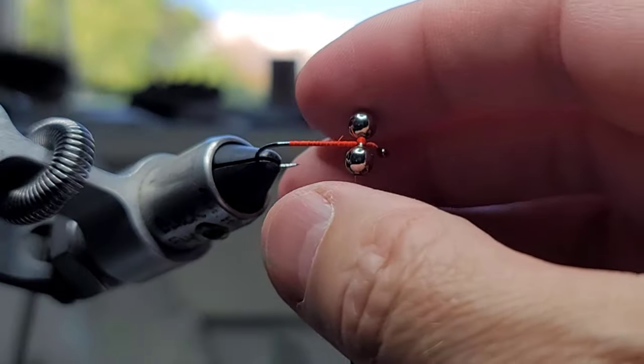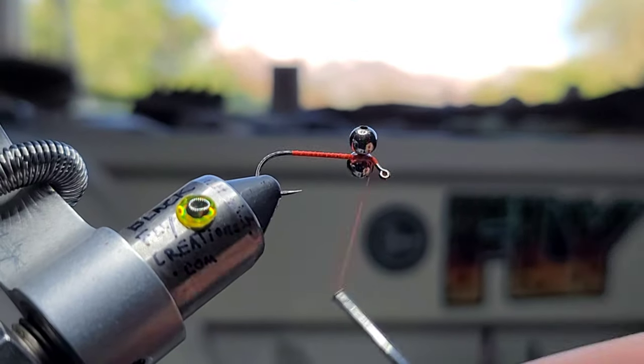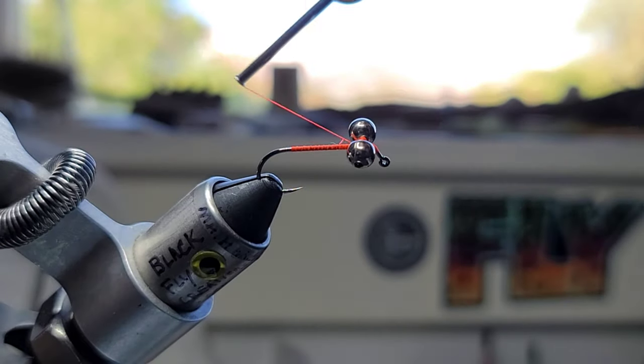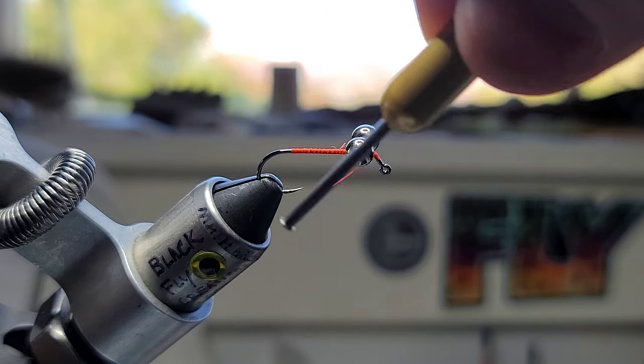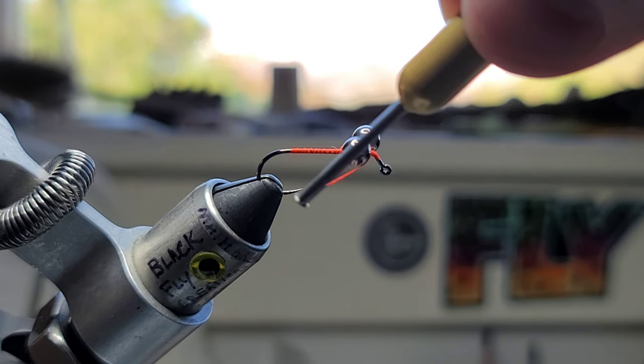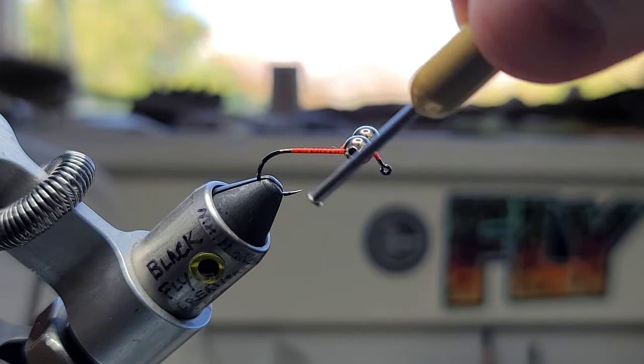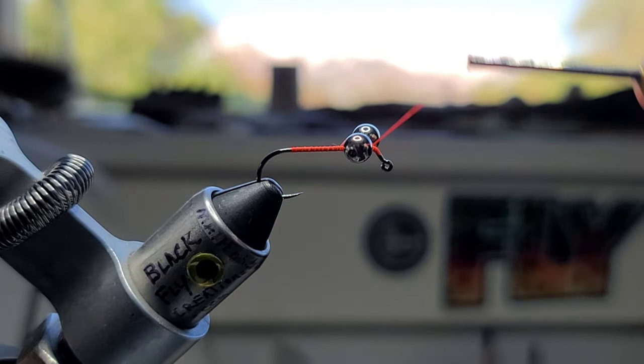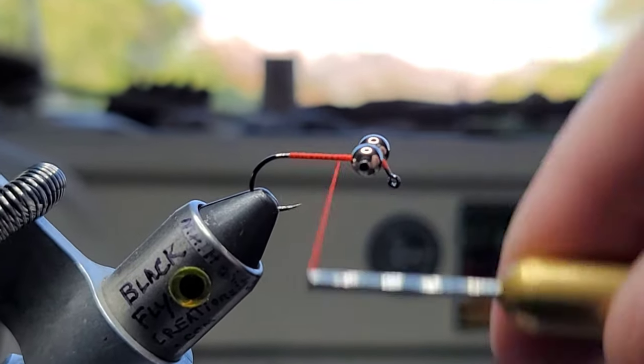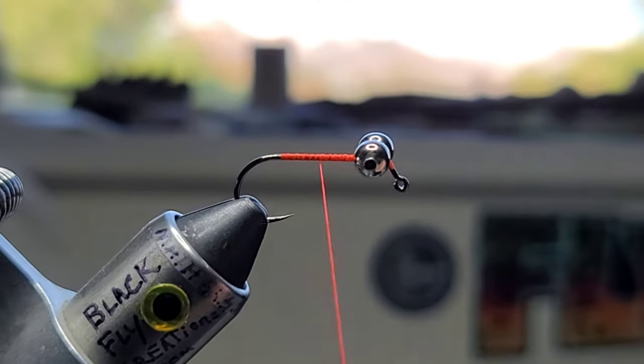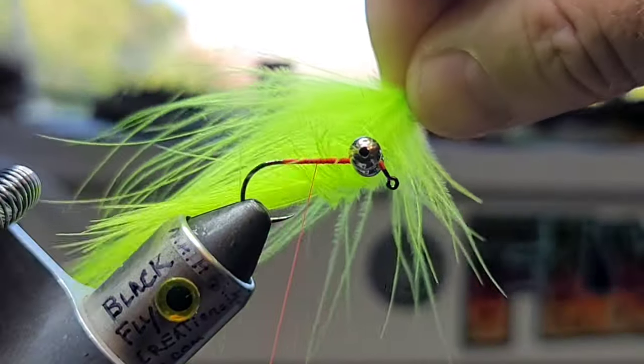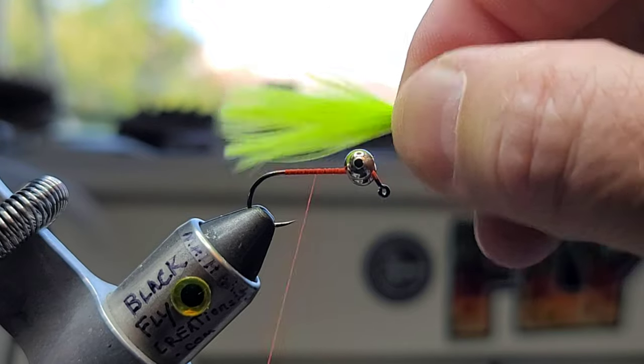Just center it on the hook. When you're wrapping it, one thing you want to do after you get them in position is go under both of them like this. What that does is cranks down your thread wraps and keeps those from spinning. You can also add a drop of super glue. Next we're just going to grab some marabou.